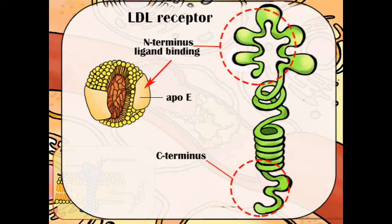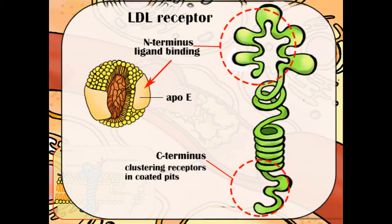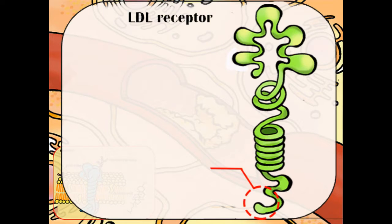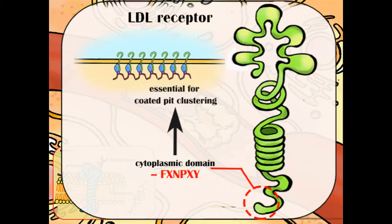The cytoplasmic domain of LDL-R plays a pivotal role in clustering receptors in coated pits, either through interaction with clathrin itself or with proteins associated with clathrin on the cytoplasmic side of the membrane. A conserved hexapeptide sequence, FXN-PXY, where X is random, in the cytoplasmic tail of LDL-R is considered essential for coated pit clustering.